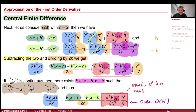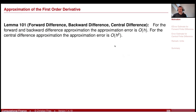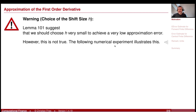That residual term has order h squared. So the central finite difference has a better approximation order — a smaller approximation error — if the derivative and the shift size are on a similar scale but small. These results suggested that we should choose our shift size h very small to achieve a low approximation error.